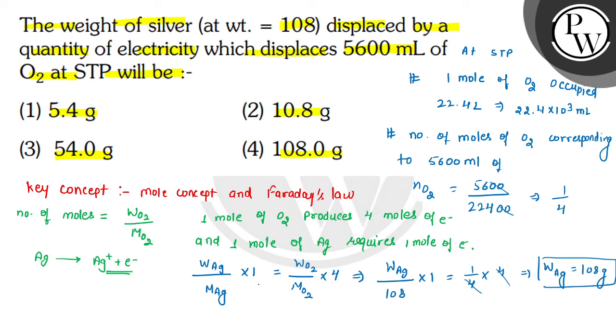The weight of silver displaced by a quantity of electricity which displaces 5600 mL of O2 at STP will be 108 grams. This is given in option 4, hence option 4 is the correct choice.